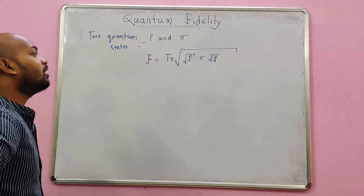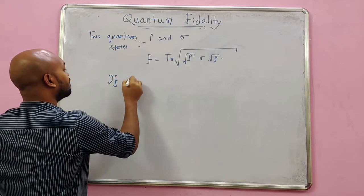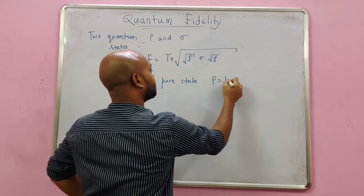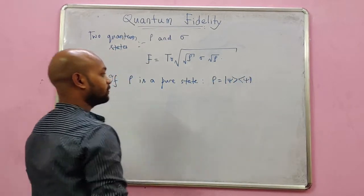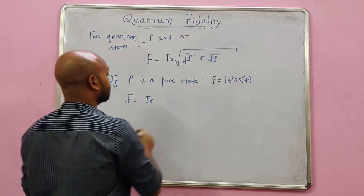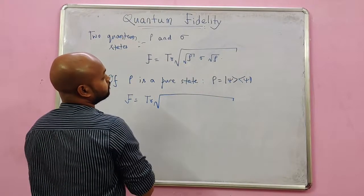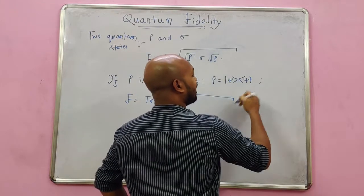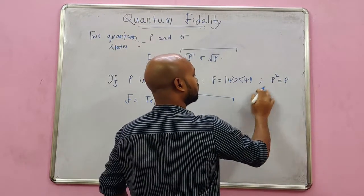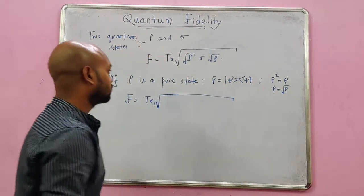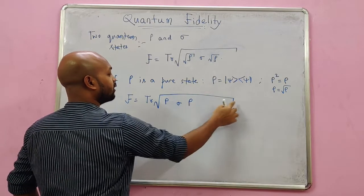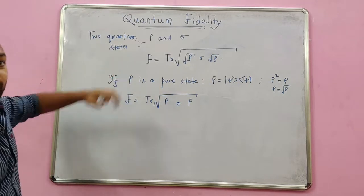Then how does this formula simplify if rho is represented by a single outer product? Let's see how the formula modifies. This F becomes trace of square root... I use another formula. I know for pure states ρ² = ρ. This is not something I am going to prove now - in fact this is quite trivial and we have provided it before. ρ² is ρ, so ρ is square root of ρ. That means this square root of rho can be replaced by rho. This is the first level of simplification.